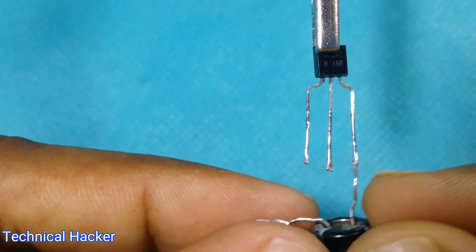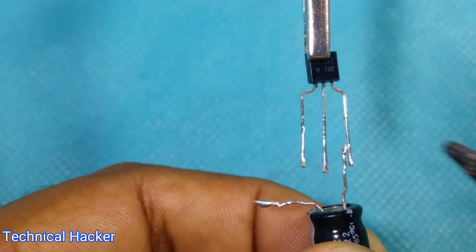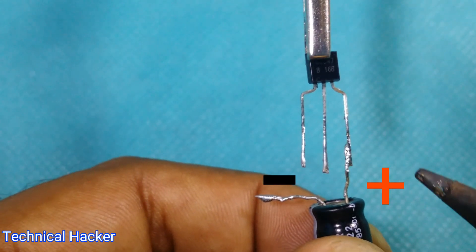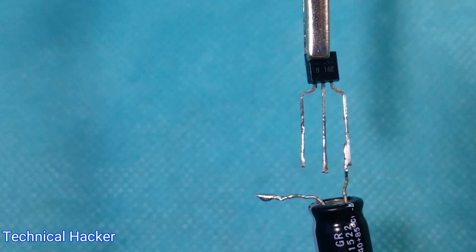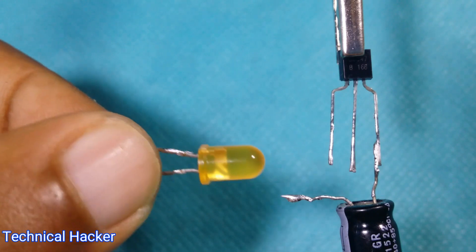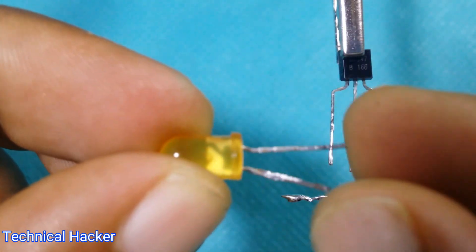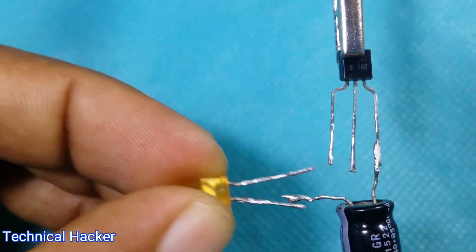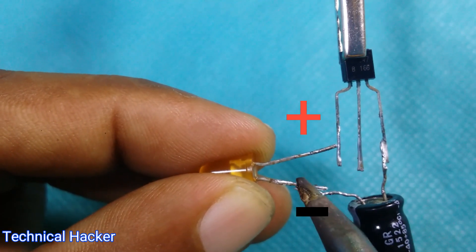Soldering capacitor positive side and transistor emitter pin. 3 volt LED have two sides, positive side and negative side. Soldering LED negative side and capacitor negative side.